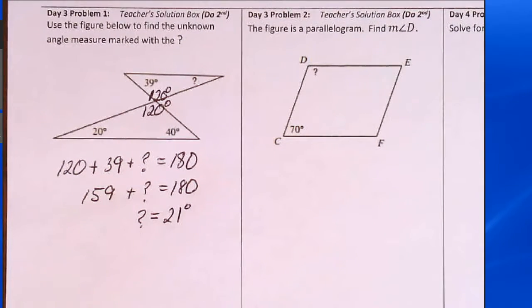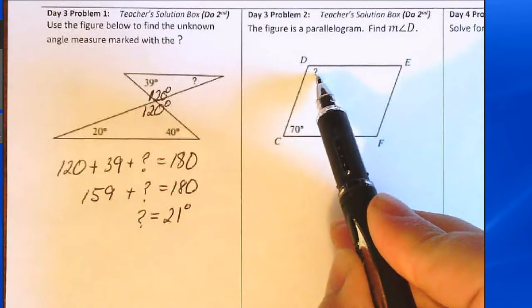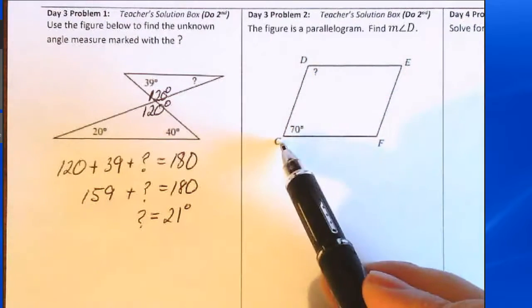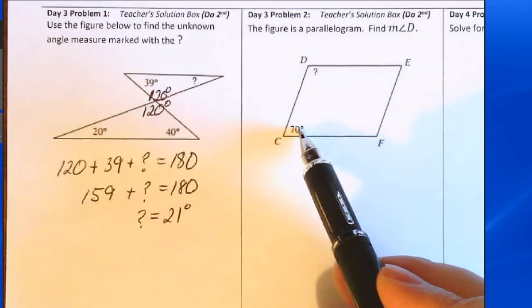Day three, problem two. The figure is a parallelogram. Find the measure of angle D, and what we have to work with is that the measure of angle C is 70 degrees.